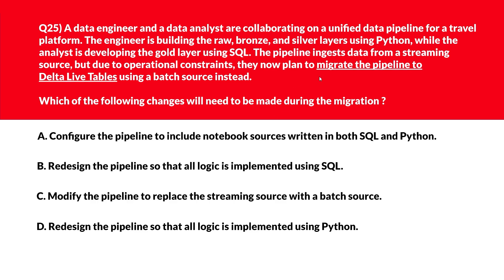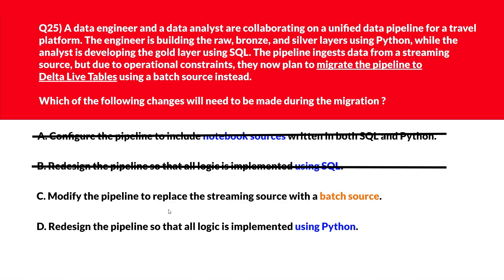All right, now let's look at this question. As per the question, we need to migrate the pipeline to Delta Live Tables using a batch source. Option A says configure the pipeline to include notebook sources written in both SQL and Python. Mixed language notebooks are supported but not required for this migration constraint — therefore we'll reject it. Option B says redesign the pipeline so that all logic is implemented using SQL. SQL-only design limits flexibility and doesn't address the source change requirement — wrong answer. Option C says modify the pipeline to replace the streaming source with a batch source. A batch source aligns with the migration constraint and simplifies pipeline stability — let's keep it.